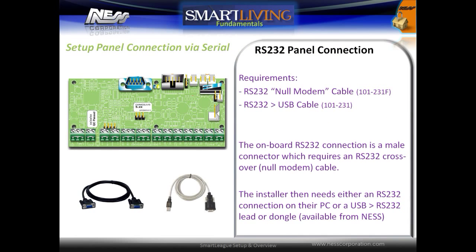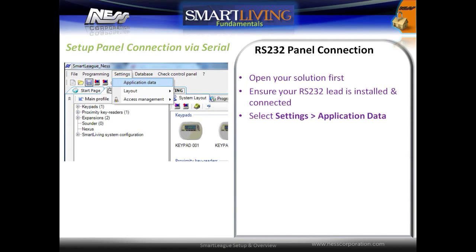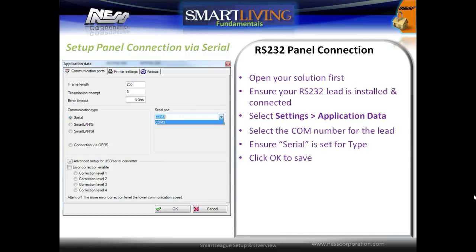Connection via RS-232 requires a null modem RS-232 crossover cable, which connects to an RS-232 programming lead. To set up an RS-232 connection, open a solution and ensure that your RS-232 lead is installed and connected. Select the Settings menu, then select Application Data. Ensure the connection type is set to Serial, then select the COM port number from the serial port list. Click OK to save the settings.